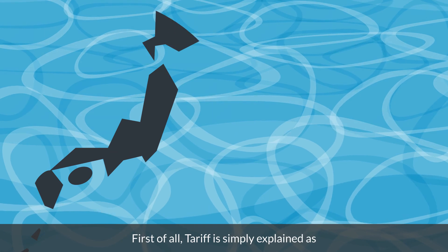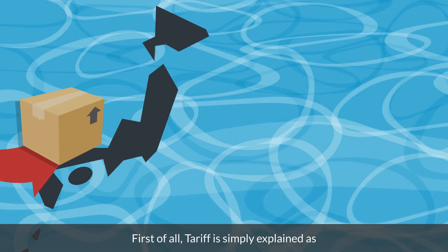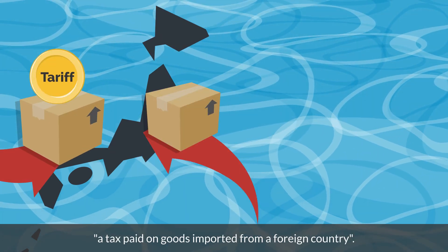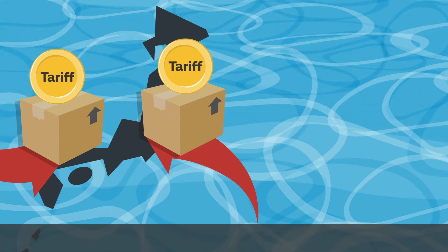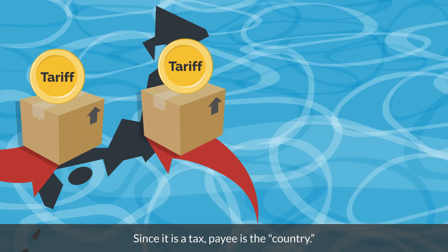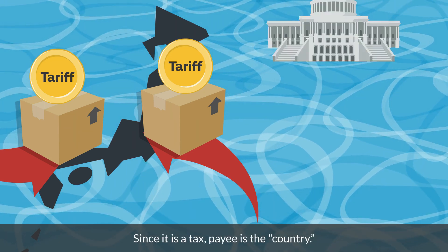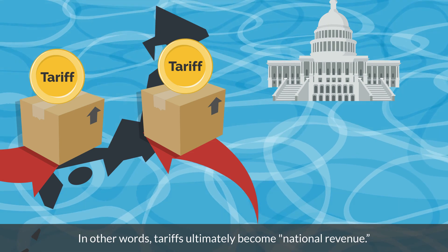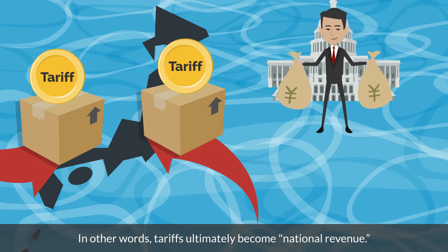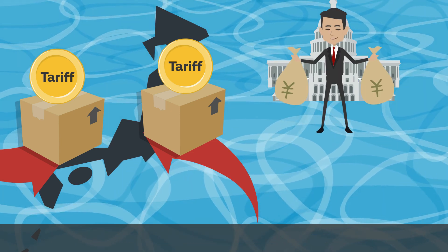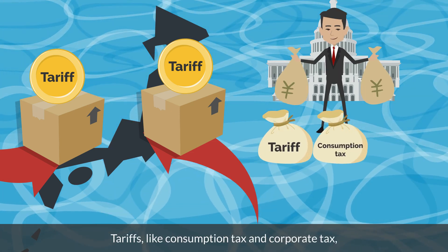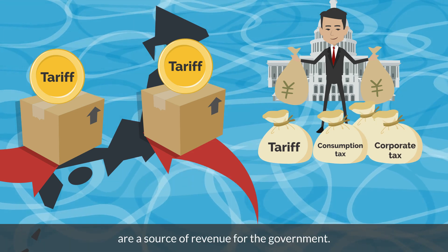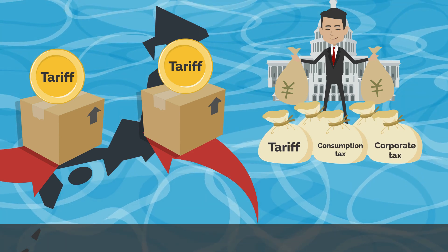First of all, a tariff is simply explained as a tax paid on goods imported from a foreign country. Since it is a tax, the payee is the country. In other words, tariffs ultimately become national revenue. Tariffs, like consumption tax and corporate tax, are a source of revenue for the government.